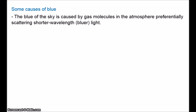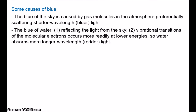During sunsets, the light has to pass through more of the atmosphere since it's coming in at an angle, and the shorter wavelengths are simply scattered away, which leaves a yellowish hue. The blueness of water has two sources. First, water simply reflects the blue of the sky. Second, the vibrational transitions of the molecules of water occur more readily at lower energies — that's the longer wavelength, the redder part of the spectrum. So water absorbs mostly longer wavelength light.